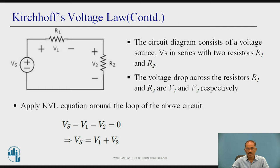The circuit diagram consists of a voltage source Vs in series with two resistors R1 and R2. The voltage drop across the resistors R1 and R2 are V1 and V2 respectively. Now, we apply the KVL equation around the loop of the above circuit.